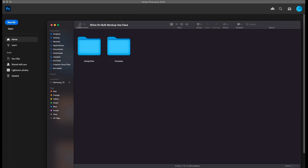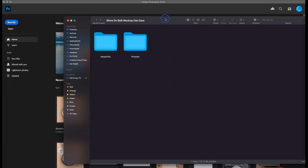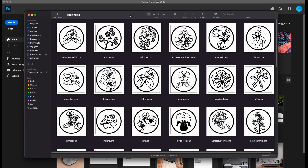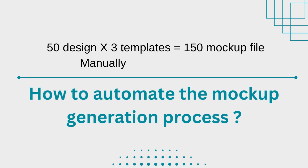This method is quite easy and simple. If you know the basic interface of Photoshop, you'll be able to edit and generate mockups very easily. It is okay if you have one or five files to make mockups from. But what about the 50 design files that we have today? For 50 design files across each of the three mockup templates, the total file count comes to 150. Creating 150 mockups will take a lot of time — at least three to four hours of manual labor. So how do we automate this process? That is exactly what we'll do now.